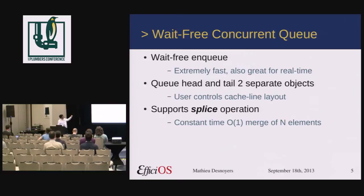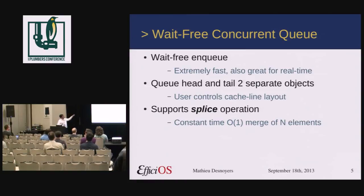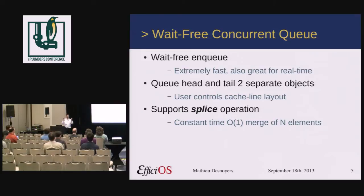About the wait-free concurrent queue: it provides a wait-free enqueue, which is extremely fast and very good for real-time. It's basically a store and an exchange operation. The queue head and tail are positioned into user-configurable locations, which means they don't need to share the same cache line, so for some workloads it can be quite interesting. It supports a splice operation where you can take two queues and merge them into a single one by doing a single operation — for N elements, you do a constant time merge.